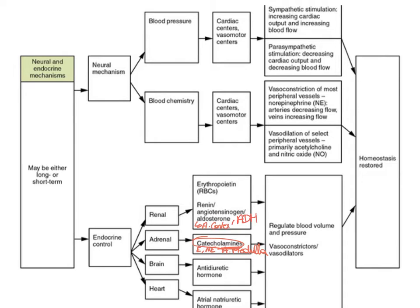The brain with the pituitary gland is involved in producing antidiuretic hormone, which, when blood pressure is low, is released in an attempt to retain water in the blood. That brings up blood volume and therefore blood pressure.